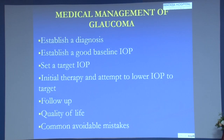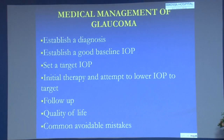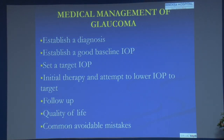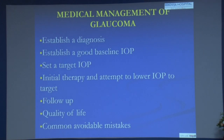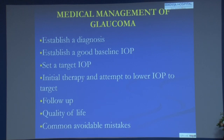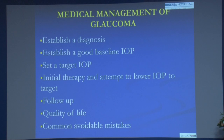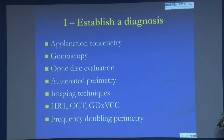Once baselines are established, set a target IOP, then initiate therapy to lower IOP to that target. Do not fire the AK-47 at the beginning — go step by step, because glaucoma is not a malignant disease. Taking even one or two months is acceptable since aggressive over-medication may cause more harm. Follow up frequently, explain the need for lifelong follow-up, consider quality of life, and avoid common mistakes.